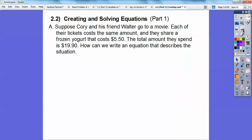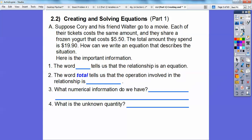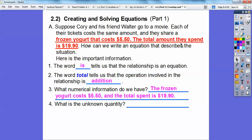Suppose Corey and his friend Walter go to a movie, and this is all word problems you guys, so today we'll try and break it down though, don't worry. Each of their tickets costs the same amount and they share a frozen yogurt that cost $5.50 and the total amount of money they spent is $19.90. How can we write an equation that describes this situation? Here's our important information right here. The word blank tells us that that relationship is an equation. The word is right here, this is means we're going to have an equation right there.